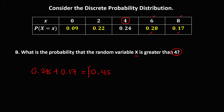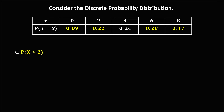Next, the probability that x is less than or equal to 2. This is x equals 2, and the number less than 2 is also included since x equals 2 is part of the probability. So we add these two probabilities: 0.09 plus 0.22, giving us the probability that x is less than or equal to 2 is 0.31.